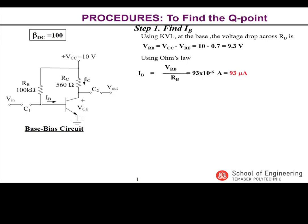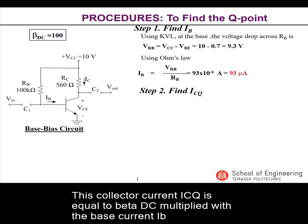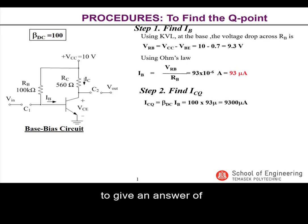After calculating the base current, we calculate the Q-point's collector current in step 2. This collector current ICQ is equal to beta DC multiplied with the base current IB to give an answer of 9.3 milliamperes.